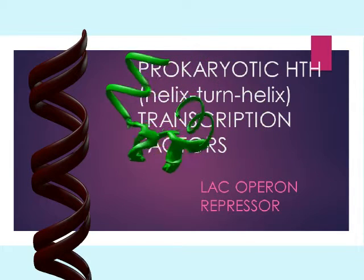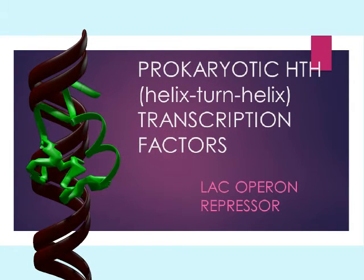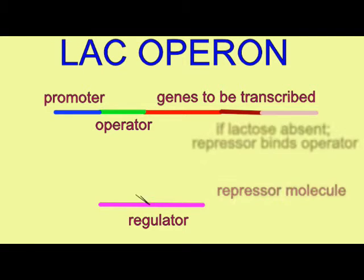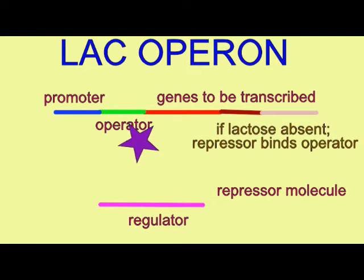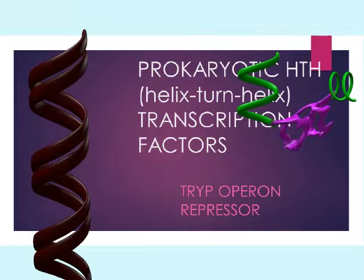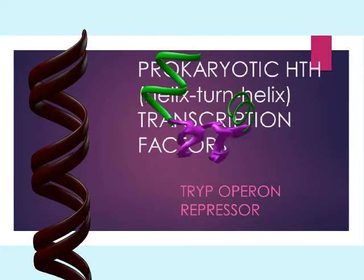The lactose repressor is an HTH protein. This regulates the activity of the lactose operon in transcribing the genes for lactose metabolism.